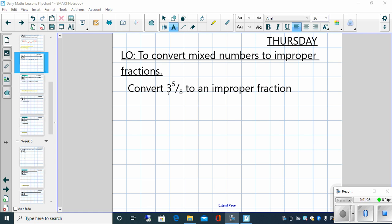But the other way of doing it is taking our whole number and multiplying it by 8. So 3 times 8 is 24 and that equates to 3 lots of 8 eighths which is 24.